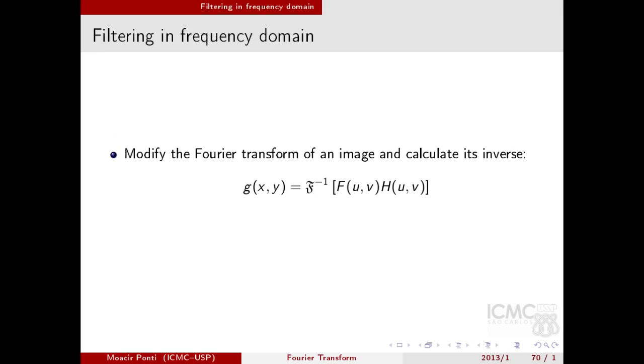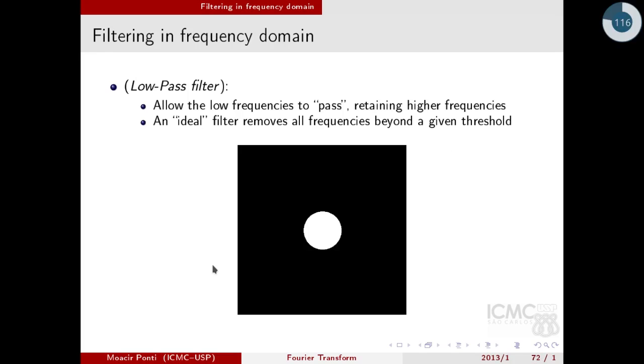Because of that, I can filter in the frequency domain by applying a multiplication and inverting the result. There are different types of filters that I can use in the frequency domain. The most common ones are related to suppress some parts of the Fourier spectrum. For example, the low-pass filter allows the low frequencies to pass and retains higher frequencies. In this case, if I multiply this filter by the FFT of an image, I can see that I will multiply by 1, which is here represented by the white color, just the lower frequencies. For the higher frequencies, I'm just multiplying it by 0.